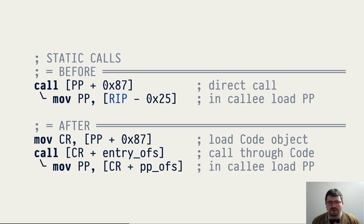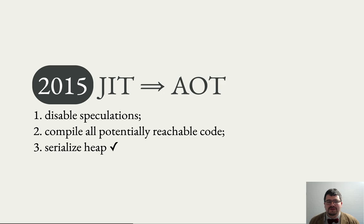This adds a little bit of indirection into calling conventions, but this change makes all the code relocatable because it no longer refers to anything in the heap — you can just write it out, map it at an arbitrary place in memory, hook it up to the code objects, and you're ready to run. The serialization and deserialization of the heap is essentially done by doing this.